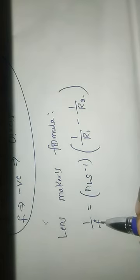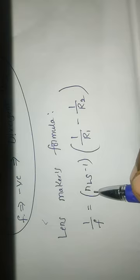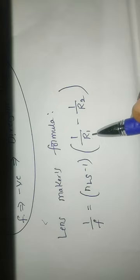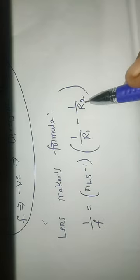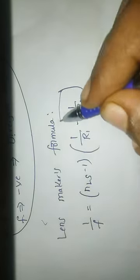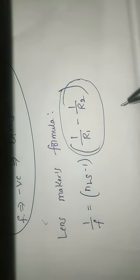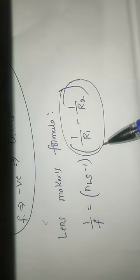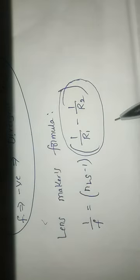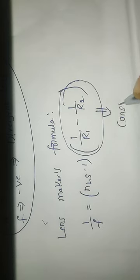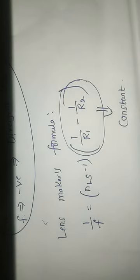Here, f is the focal length of the lens. NLS is the relative refractive index of the lens with respect to the surrounding medium. R1 is the first surface radius of curvature, and R2 is the second surface radius of curvature. When the medium changes, the radius of curvature does not change. The difference of the reciprocal of the radii of curvature in any medium is constant — it is a constant term. So (1/R1 − 1/R2) is constant, and NLS is a variable.